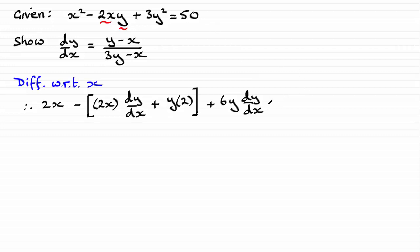Then we've got the differential of 50, that constant with respect to x, and that's going to be simply zero. Now I'm going to expand this out. We've got the 2x, we've got minus 2x dy/dx here and we've got minus the 2y, and finally we've got that plus 6y dy/dx.